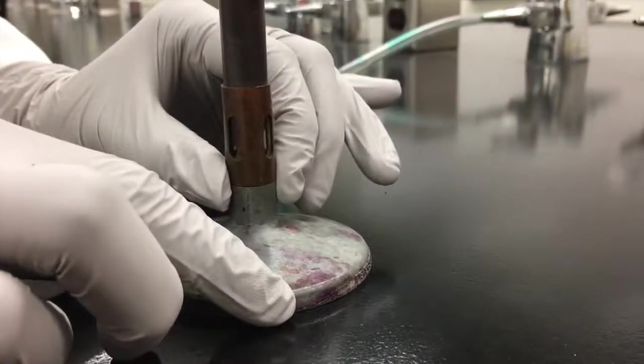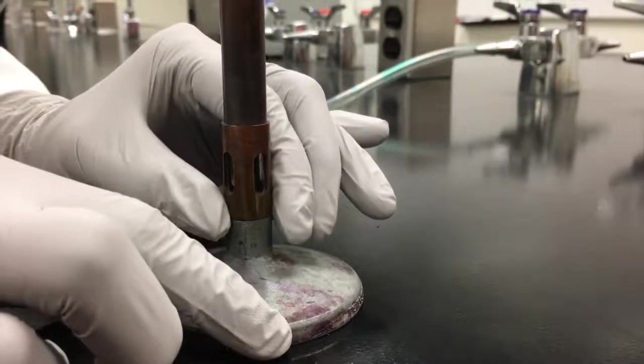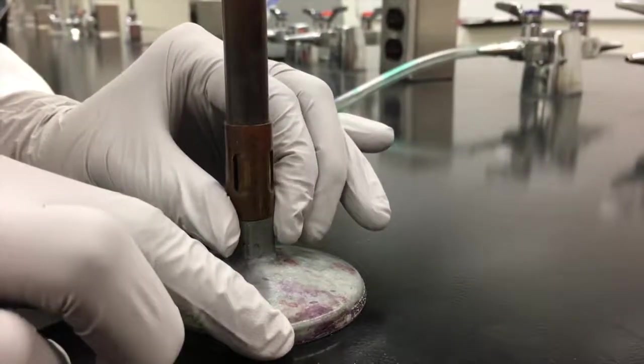At the base of your Bunsen burner you can see these windows. Closing them ensures that less air is forced through and allows you to more easily ignite your Bunsen burner.